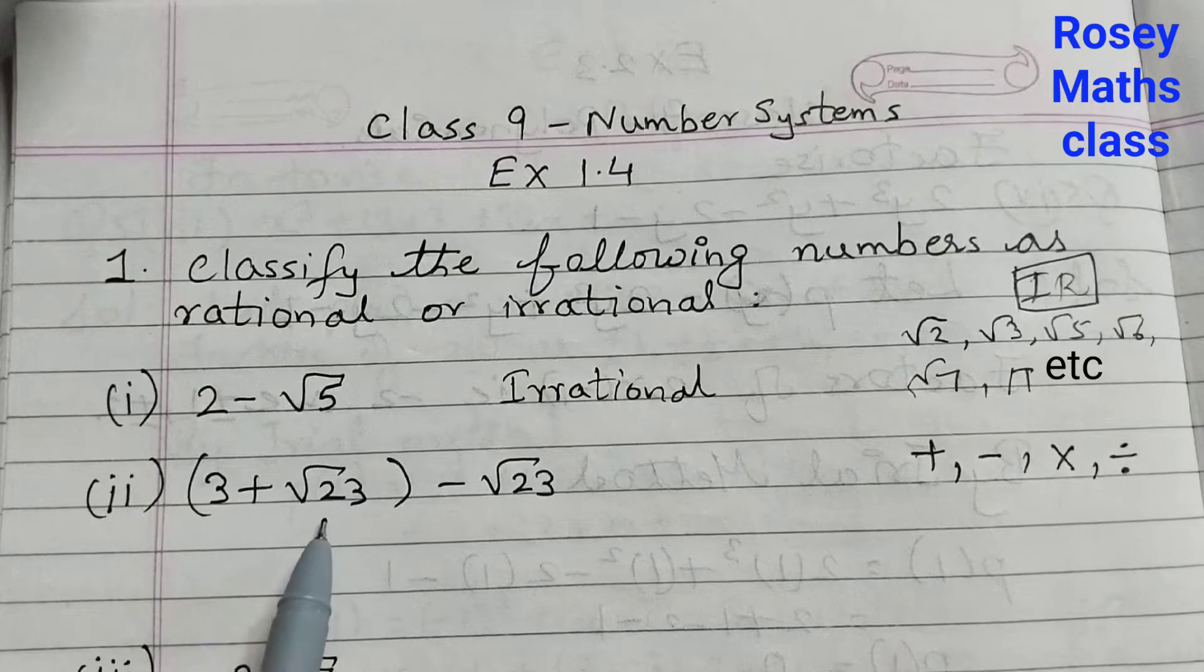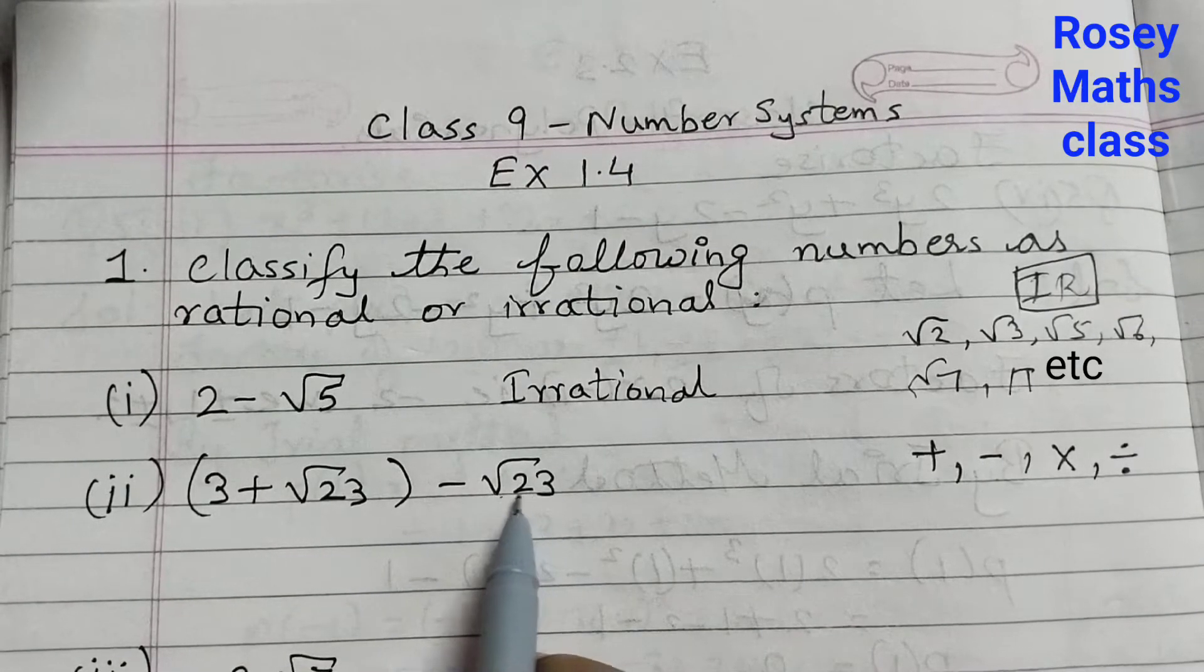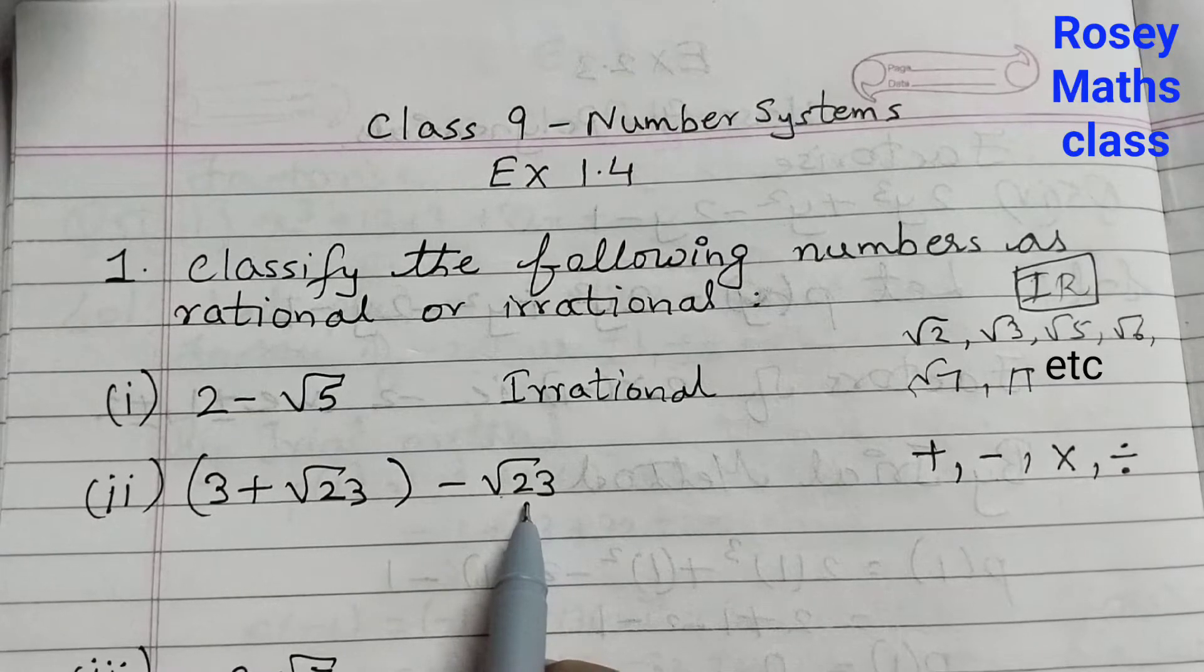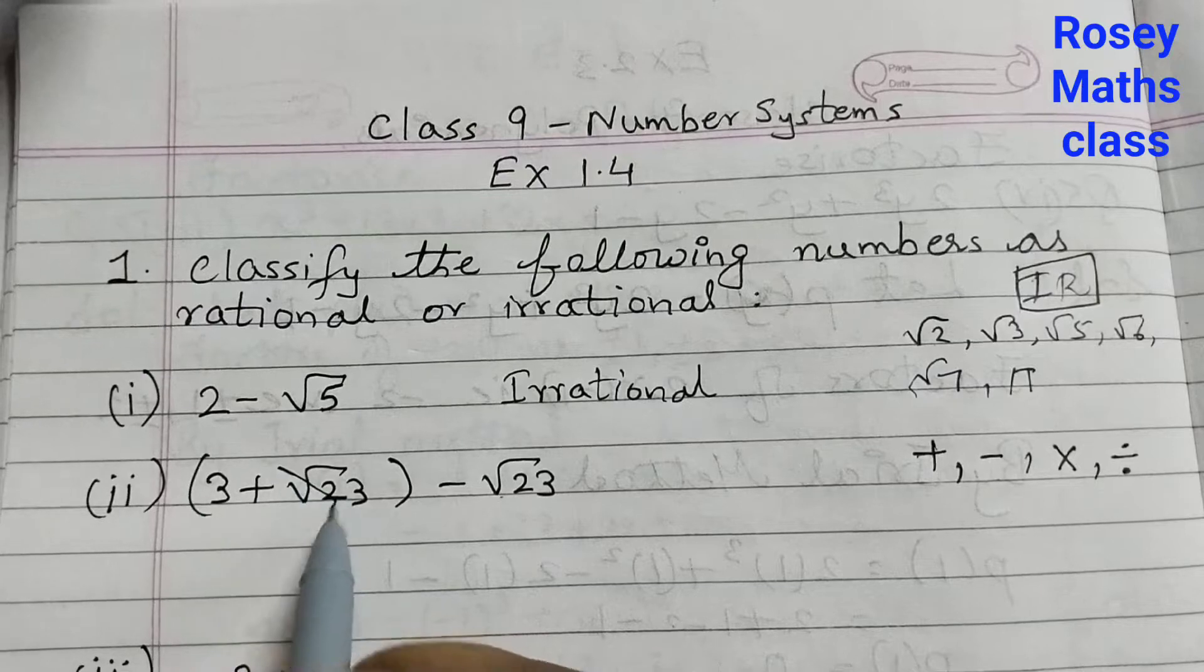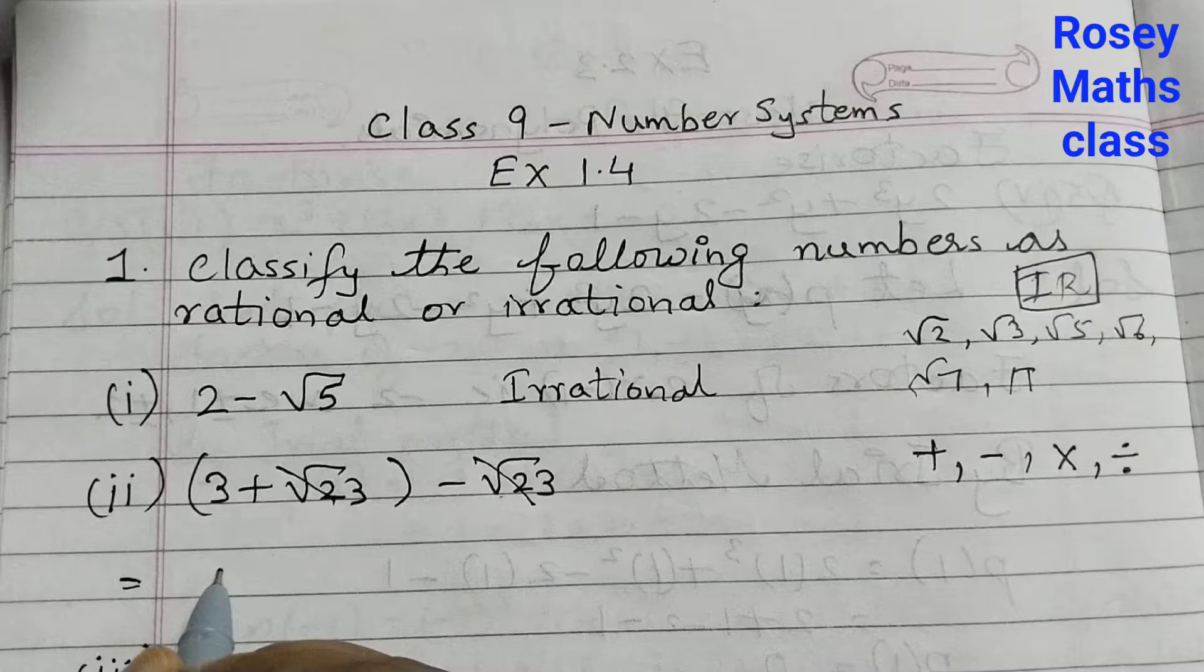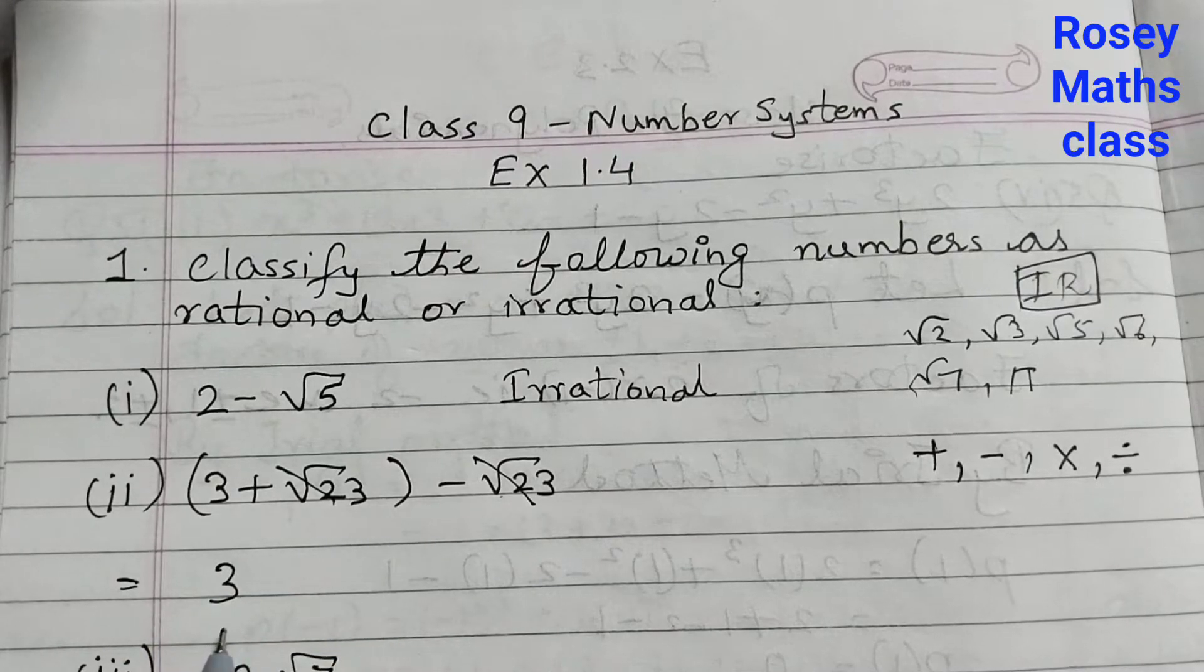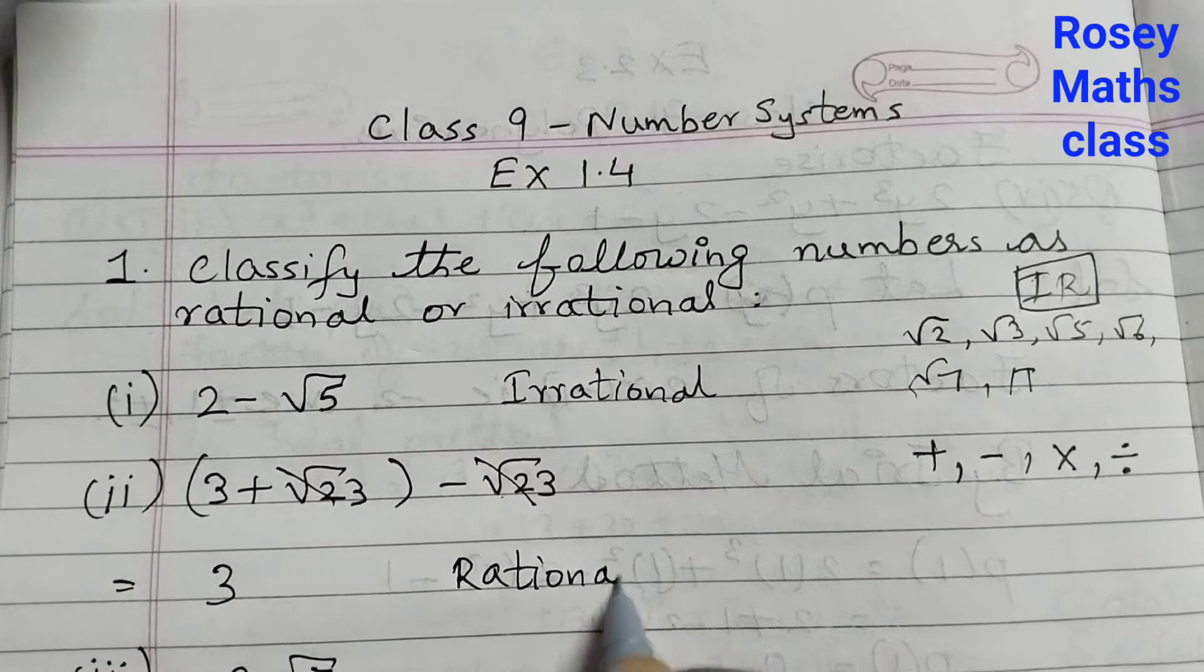3 plus root 23 minus square root of 23. Square root of 23 is an irrational number. But then, when you open up the bracket, plus 23 minus 23 cancels out. So we are left with only 3. 3 is a rational number. So this would be a rational number.